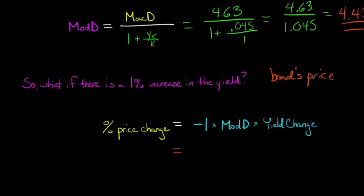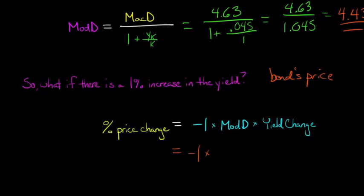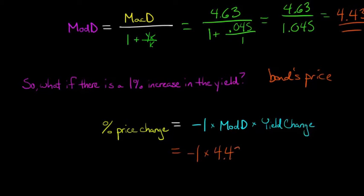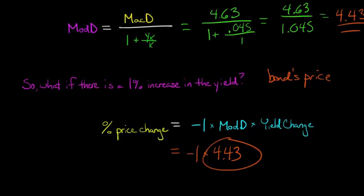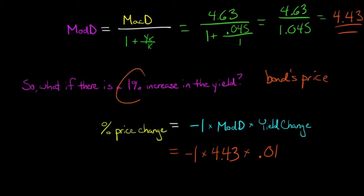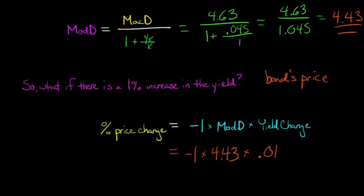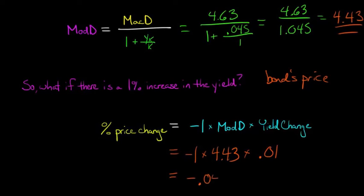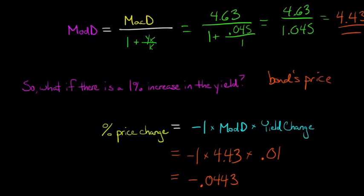So let's plug and chug for this. We're going to have negative 1 times 4.43, which we just calculated—that's the modified duration—times the yield change. The yield change is 0.01, it's a 1% increase, so we just say 0.01. And then that's going to equal negative 0.0443.